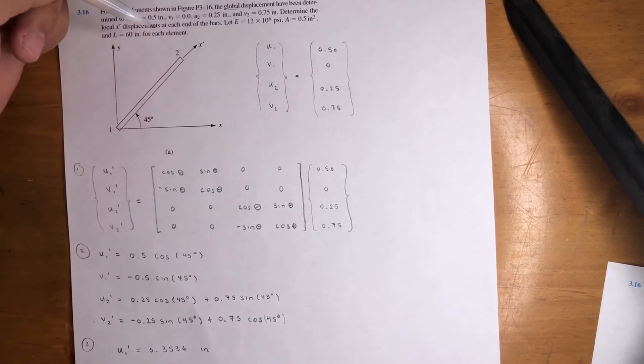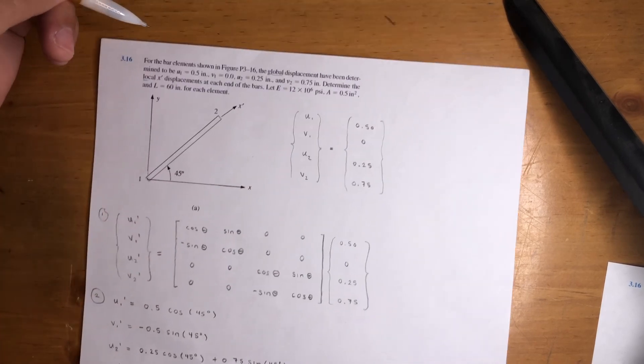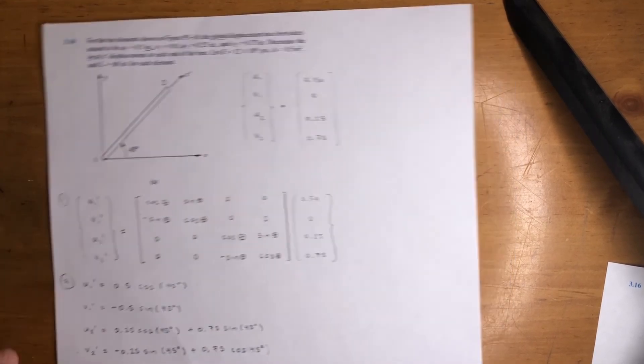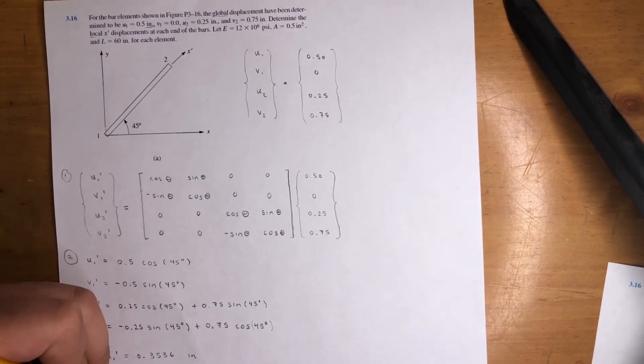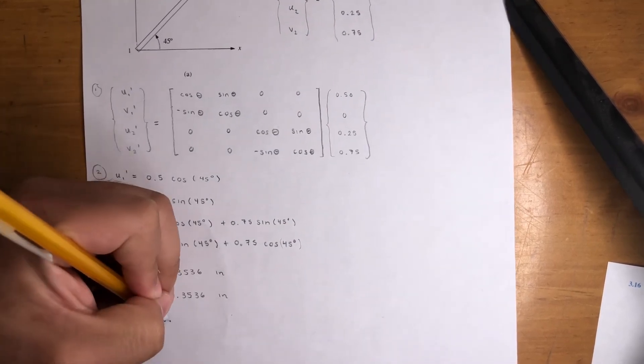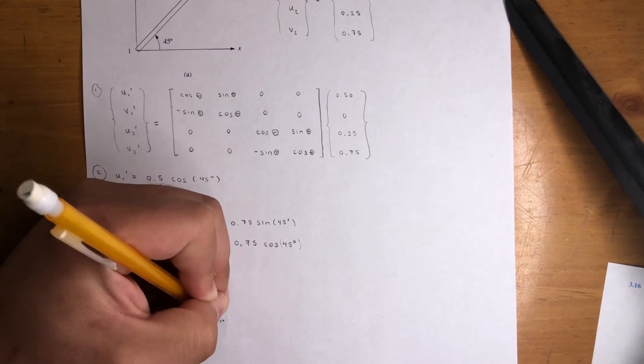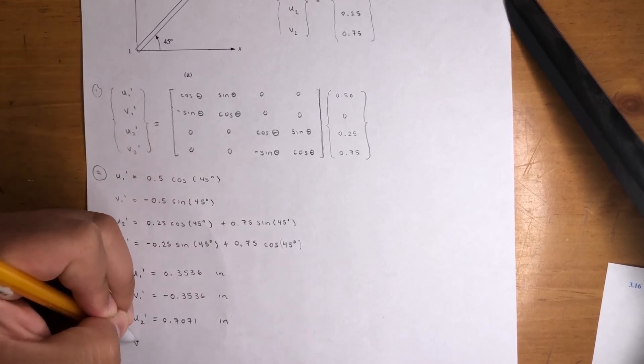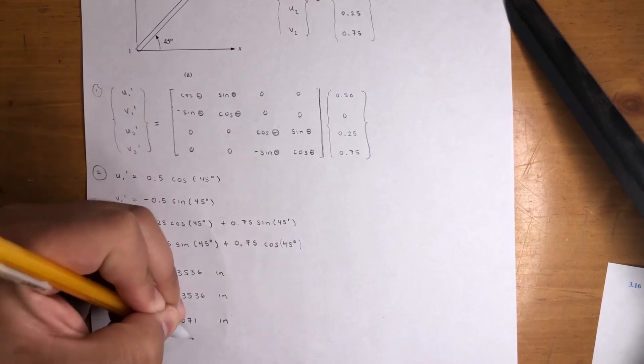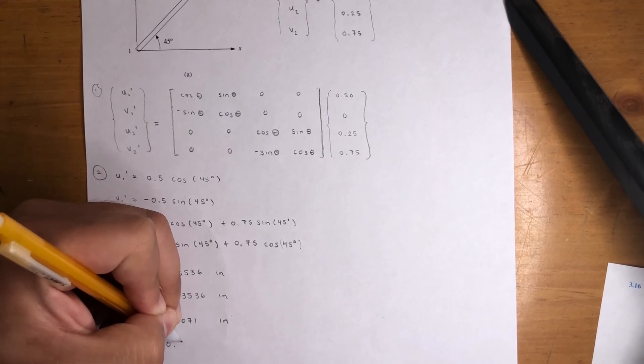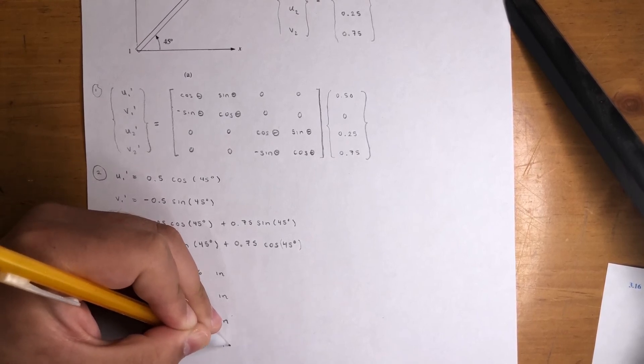U2 prime is equal to, let me move it up in case you can't see, 0.7071 inches. And finally, V2 prime is 0.3536 inches.